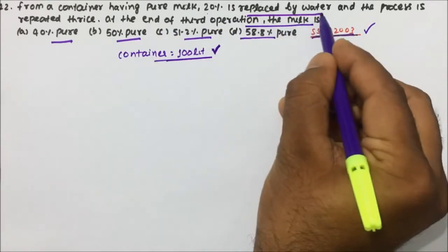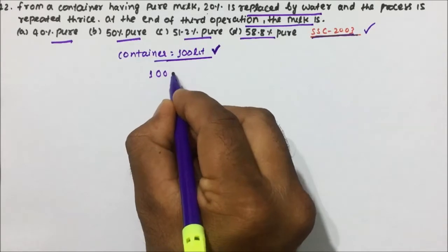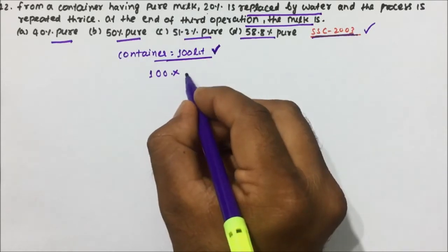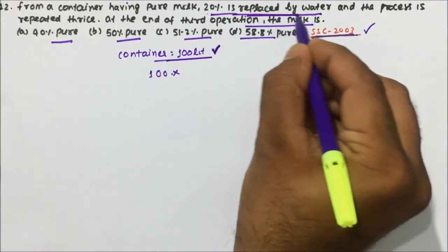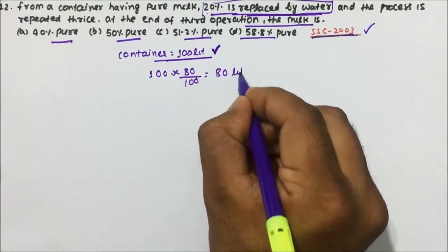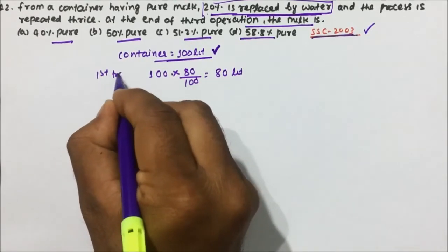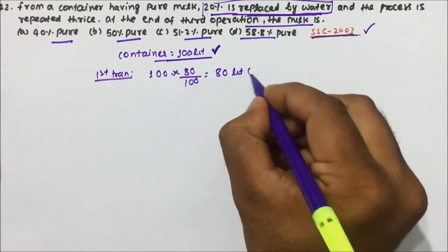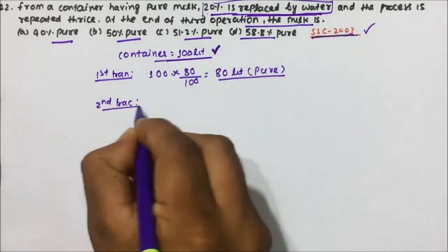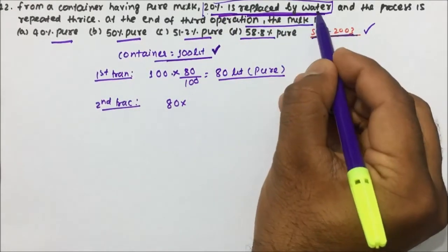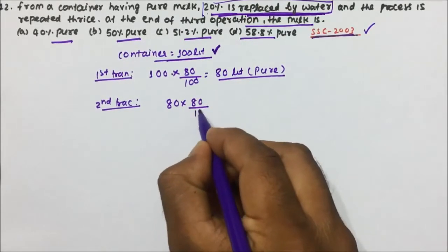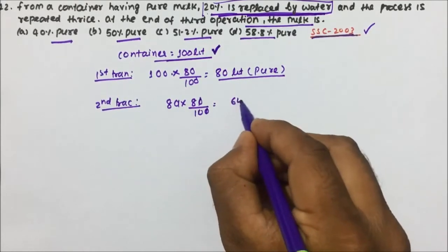Since the options are in percentage, we assume 100 litres. In the first transaction, 20% is replaced by water, so 20% becomes water and the remaining 80% is pure milk. After the first transaction, pure milk is 80 litres.